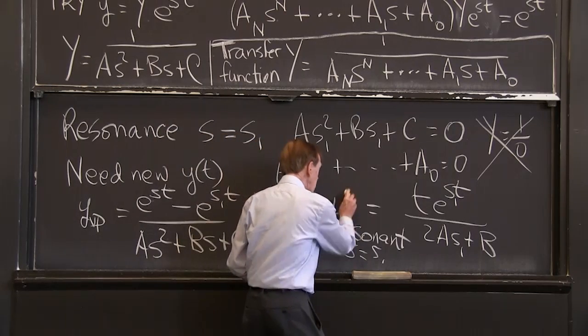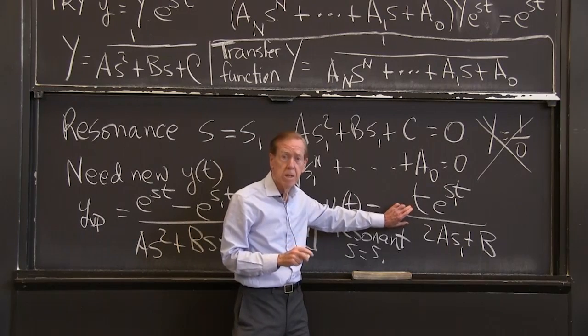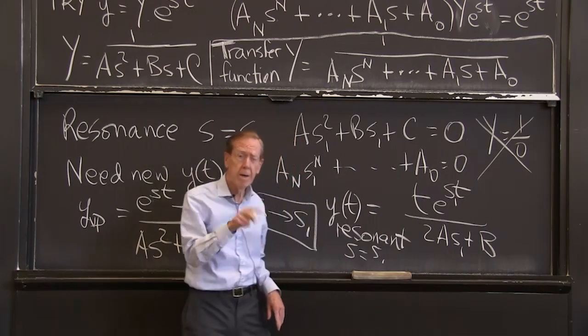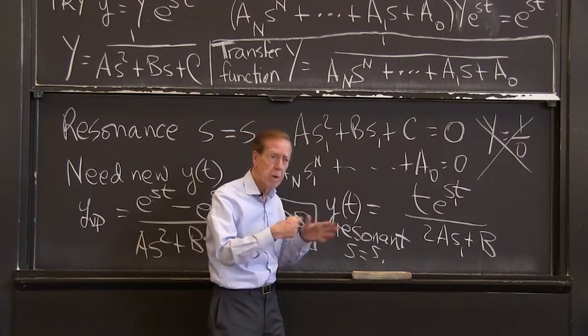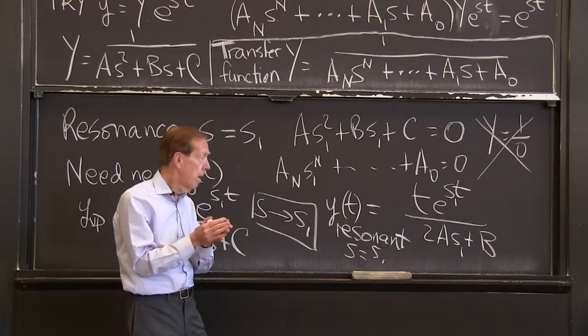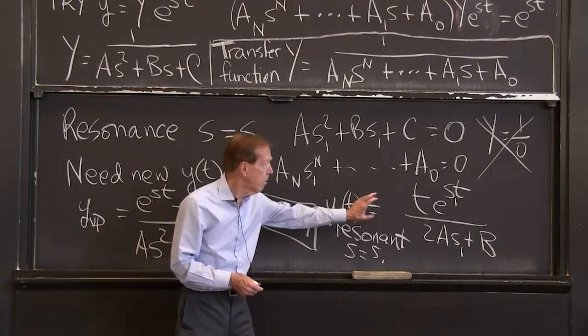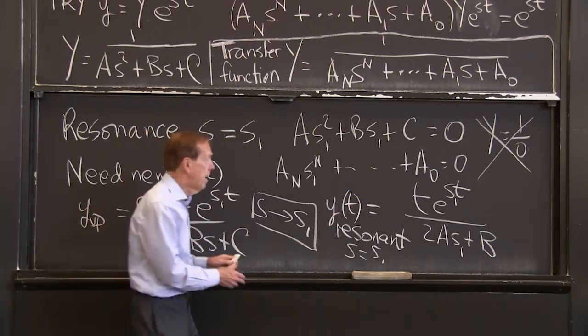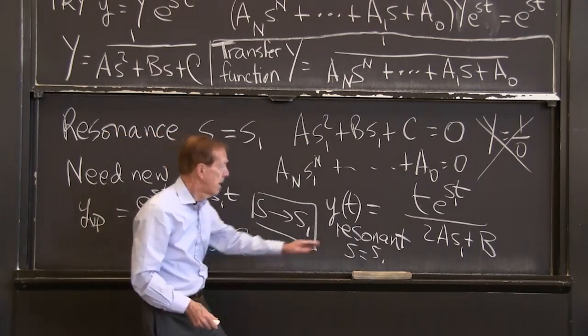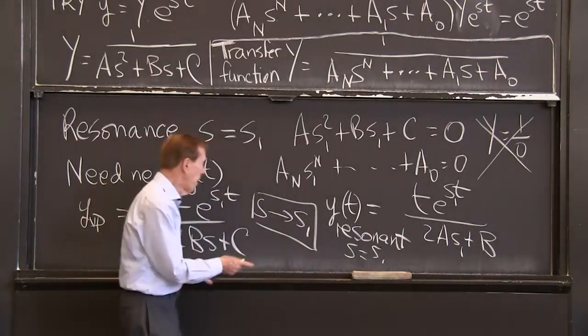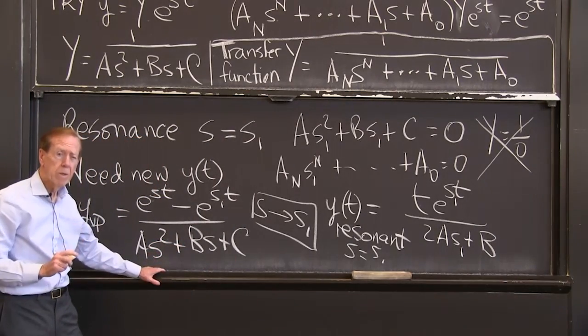So let me write the answer. Why resonant? Can I call this the resonant solution when s equals s1? And what is it equal? Well, I take the s derivative of this and divide it by the s derivative of that. Derivative over derivative. The s derivative of that is t e to the st. And the s derivative of this is 2 a s plus b.